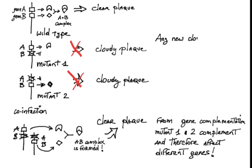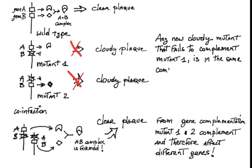The complementation test can be used to assign any new mutant to a gene. For example, a new cloudy mutant that fails to complement mutant 1 is said to be in the same complementation group, that is, it affects the same gene.